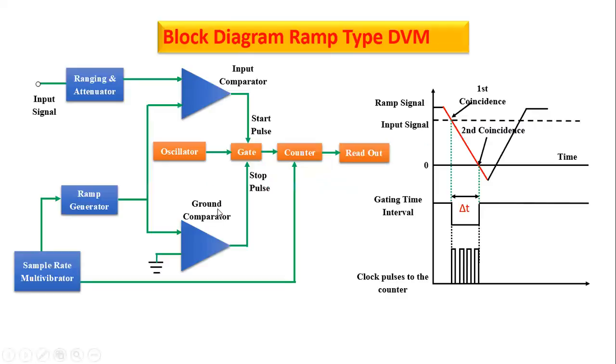Dear students, today we are going to study about ramp type DVM. There are several types of DVM. DVM means digital voltmeter. Generally, we measure the voltage. We have to study the syllabus according to the digital voltmeter block diagram and see how it works. Let us see the block diagram of ramp type DVM.